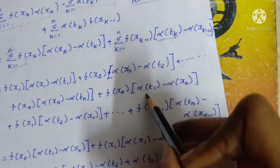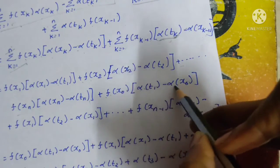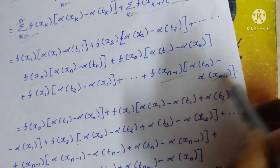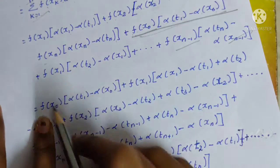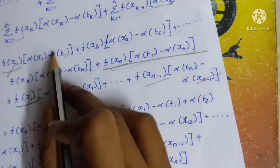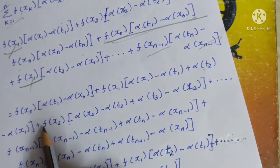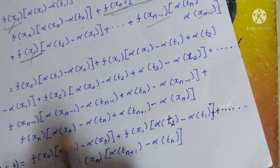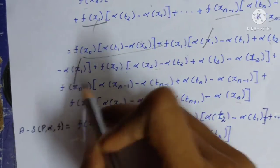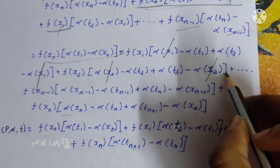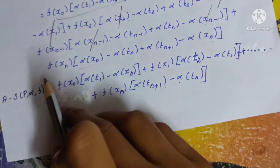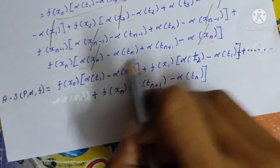We get x_0 times alpha(t_1), then k=1 minus alpha(x_{k-1}) which is x_0. With n terms: x_{n-1}. For f(x_1) and f(x_1), two terms combine. Next f(x_2) terms appear, up to f(x_n). Here minus alpha(x_1) causes two terms to cancel, and alpha(x_2) terms also cancel. Similarly f(x_{n-1}) times alpha(x_{n-1}) minus alpha(x_{n-1}) cancels, and f(x_n) alpha(x_n) minus alpha(x_n) cancels.